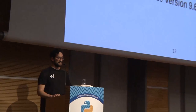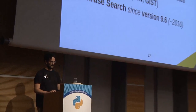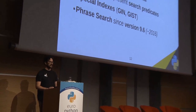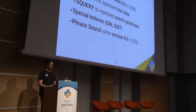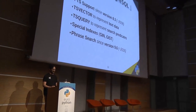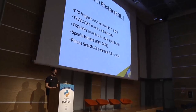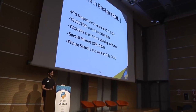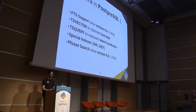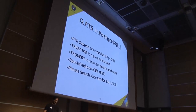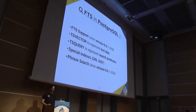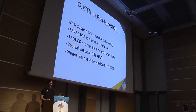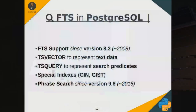Postgres has been supporting full-text search since 2008. Internally it uses TSVector and TSQuery to process the data into search. It has some indexes that can be used to speed up the search: GIN and GIST.